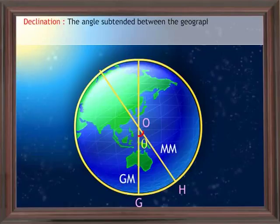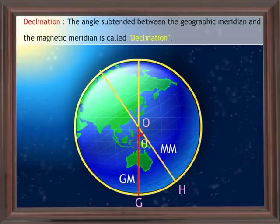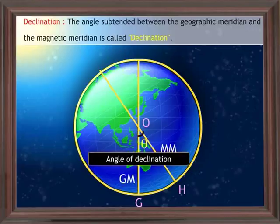Declination is the angle subtended between the geographic meridian and the magnetic meridian. In the figure, MM represents the magnetic meridian and OG represents the geographical meridian. The angle GOH is called the angle of declination, represented by theta.